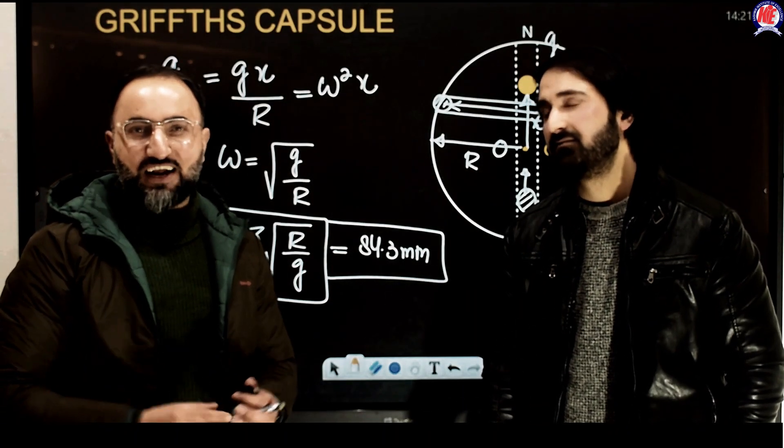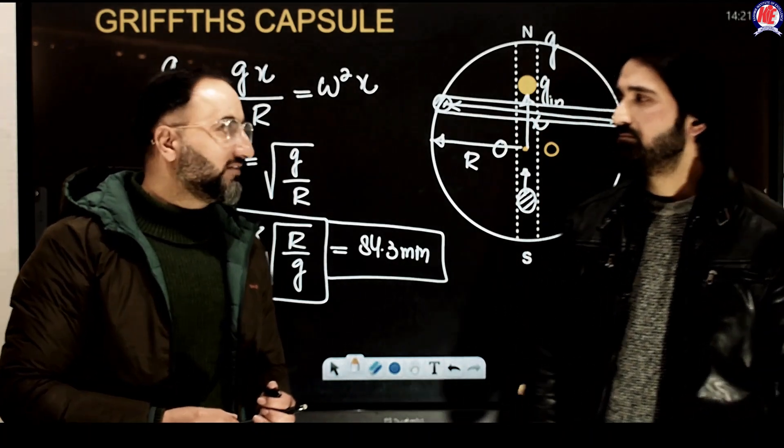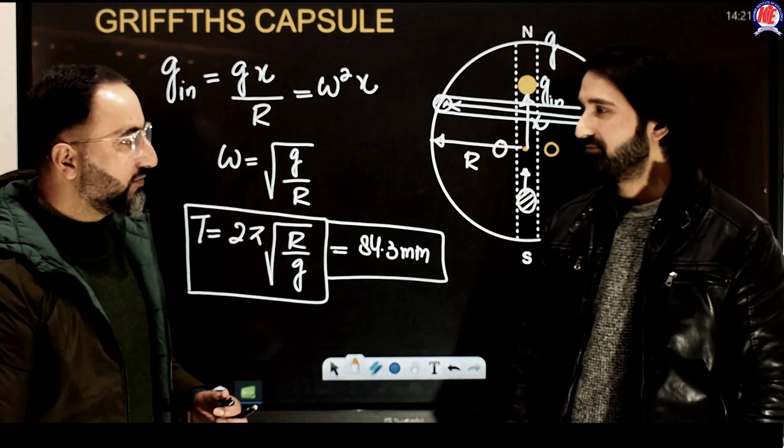Number one is that, if for example, assume that there is a satellite which is revolving around the Earth, but very close to the Earth. What's its time period? 2π under root of r by g.